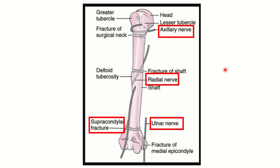This picture is very important as it shows different parts of the humerus and corresponding nerve injuries. A surgical neck fracture may damage the axillary nerve. A mid-shaft humerus fracture may injure the radial nerve. Injury to the supracondylar area may damage the median nerve, and the ulnar nerve may be injured at the medial epicondyle, which is located at the most inferior part.